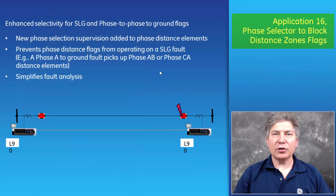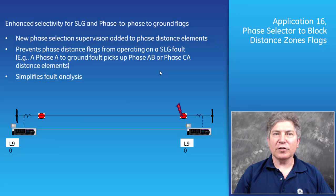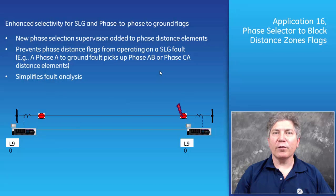Application 16: Phase selector to block distance zone flags. The phase selector supervises phase distance elements for improved protection selectivity. Phase distance elements can operate when sensing three-phase, phase-to-phase, phase-to-phase-to-ground, and single phase-to-ground faults. With the latest firmware release, the phase selector element supervises the operation of the phase distance element when sensing a single line-to-ground or phase-to-phase-to-ground fault type. Once ground distance elements have picked up, it prevents phase-to-phase elements from tripping. This supervisor also maintains selectivity for evolving faults and simplifies fault event analysis.